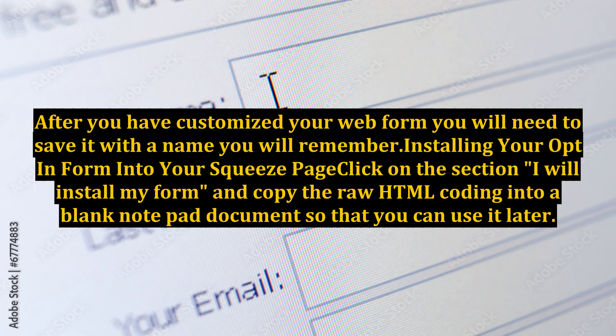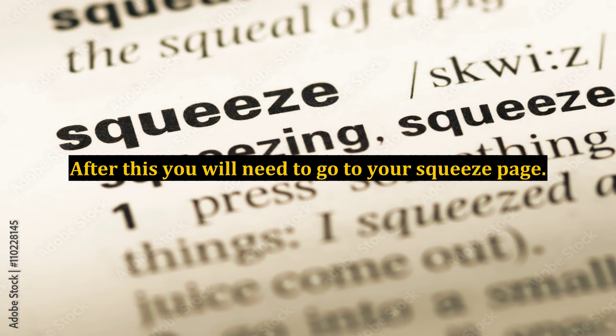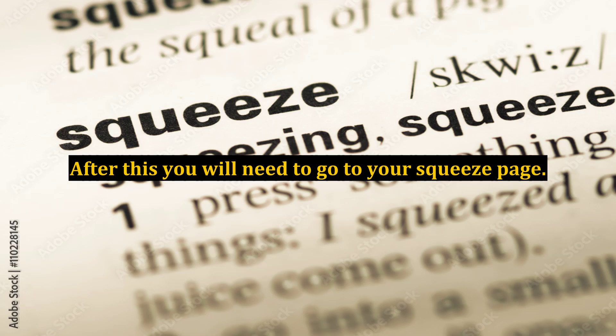To install your opt-in form into your squeeze page, click on the section 'I will install my form' and copy the raw HTML coding into a blank Notepad document so that you can use it later. After this, you will need to go to your squeeze page. If your squeeze page is a WordPress site, then you can add the code to a text widget and drag that to wherever you want the form to appear.